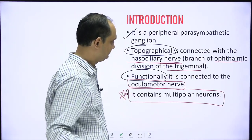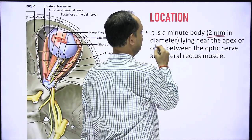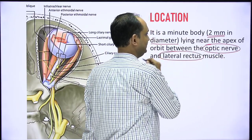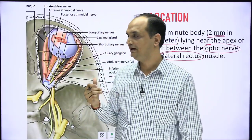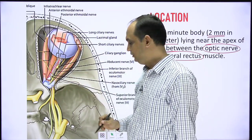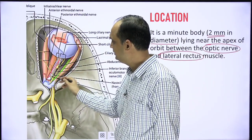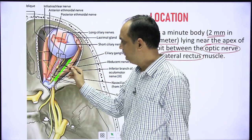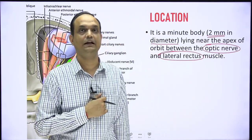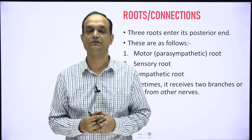The ciliary ganglia is a very small ganglia, 2mm in diameter, lying near the apex of the orbit. At the apex you have two structures: the optic nerve and the lateral rectus muscle. The ciliary ganglia is sandwiched between these two - it lies just lateral to the optic nerve, inside the lateral rectus muscle. This location is a very commonly asked exam question: the ciliary ganglia sits between the lateral rectus and the optic nerve.